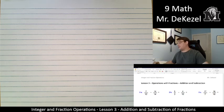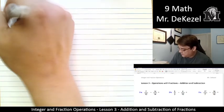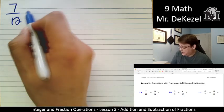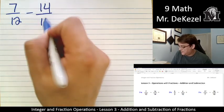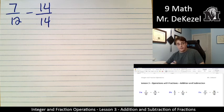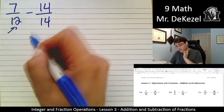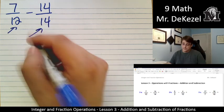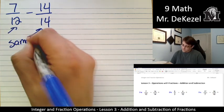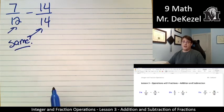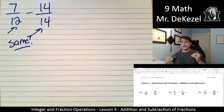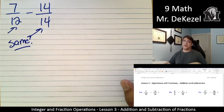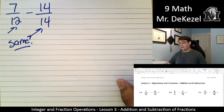We have first 7 over 12 subtract 14 over 14. And here's the key when we are adding or subtracting fractions. The denominators, they need to be the same. They're not the same here. So we are going to always be working on adding and subtracting fractions to make the denominators the same. In this case, it's a little bit special.